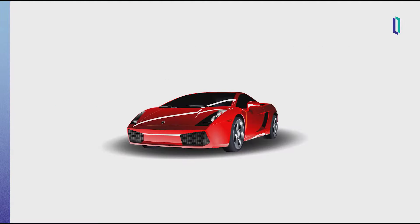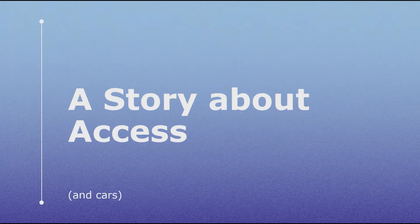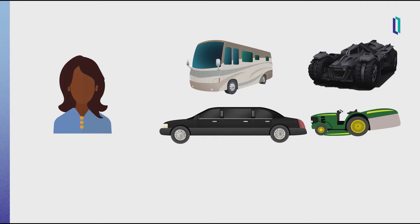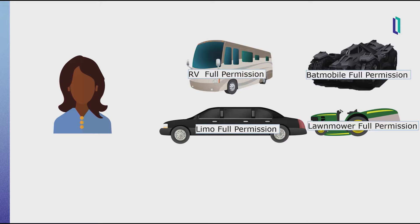But first, let's talk about owning a lot of cars and letting people borrow them. This is a story about access and cars. Let's say there's a very rich individual who owns many specialty and luxury vehicles, and they keep them in a very fancy attended garage. They have an RV, a limo, a Batmobile because they have Batmobile money, and a riding lawnmower because they have riding lawnmower money. As the owner, they're allowed full permission to do whatever they want with any and all of these vehicles.